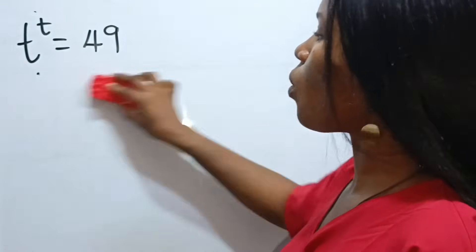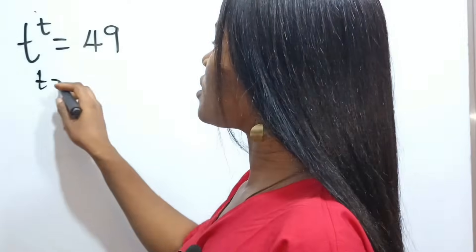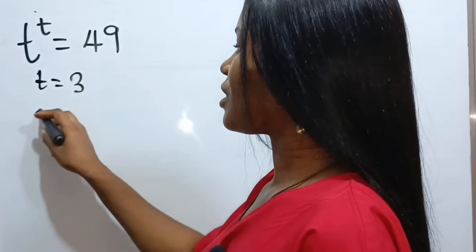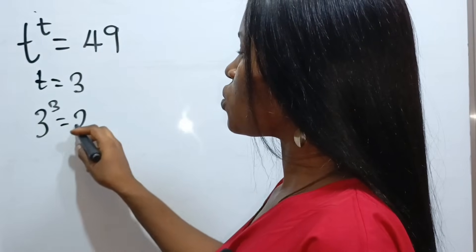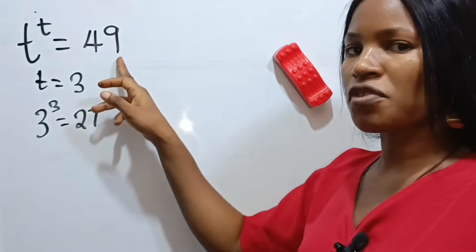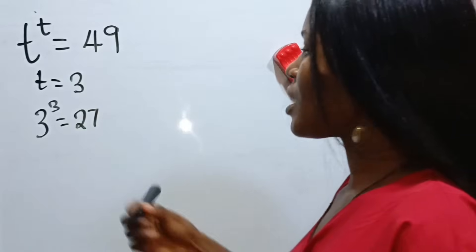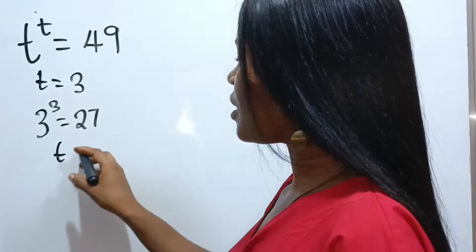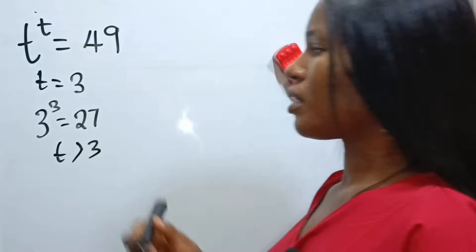Now, if we say that t is equal to 3, that means that 3 to the power of 3 is equal to 27. So, 3 to the power of 3 is 27, which is still less than 49. This simply means that our t is greater than 3.